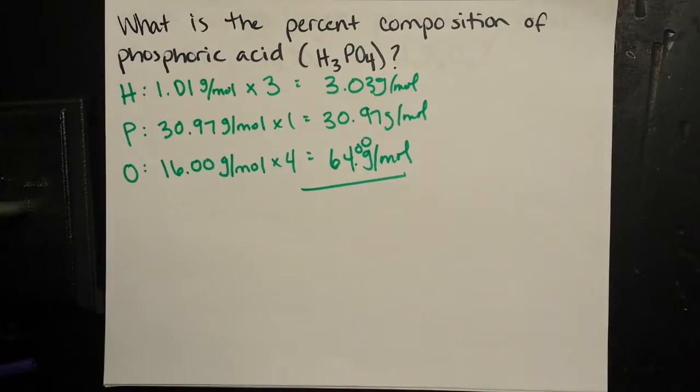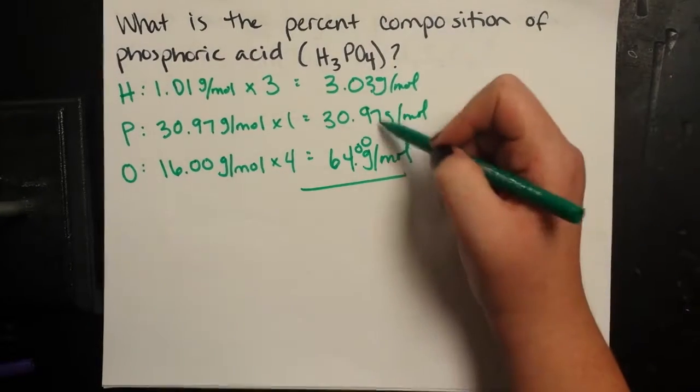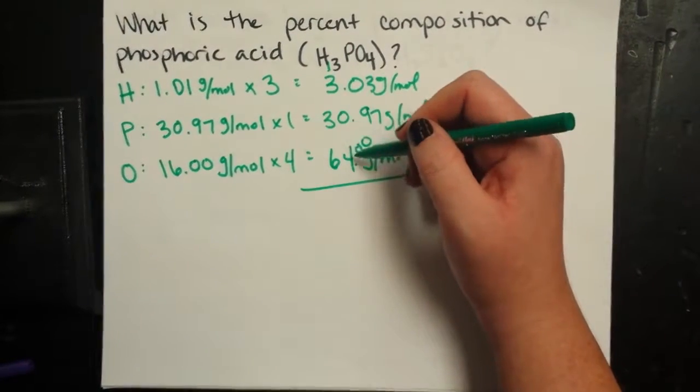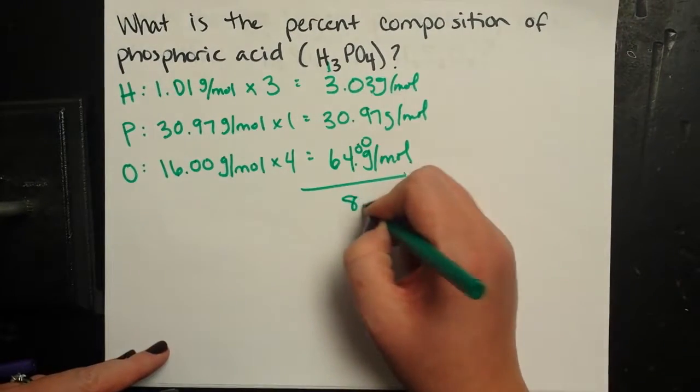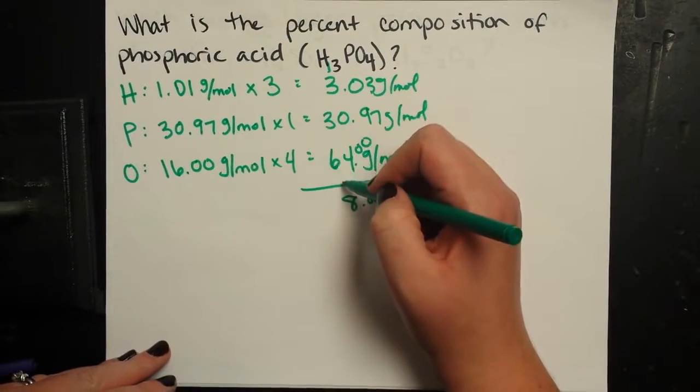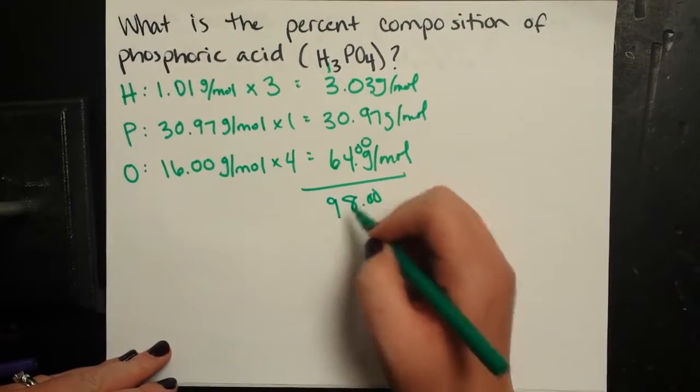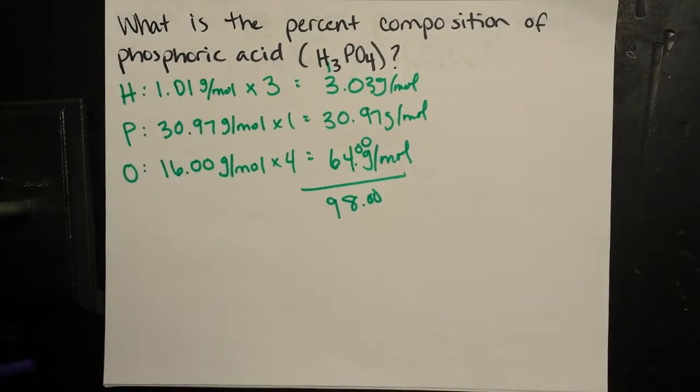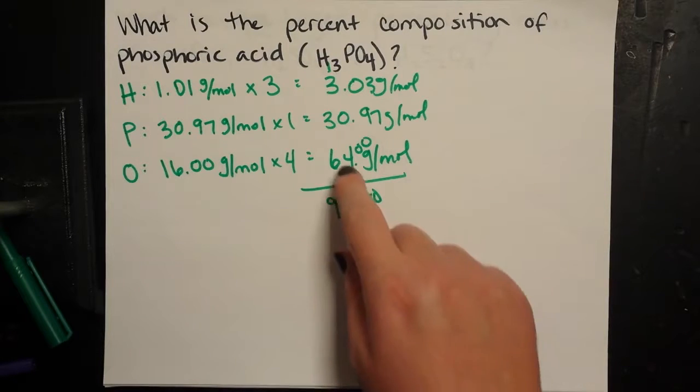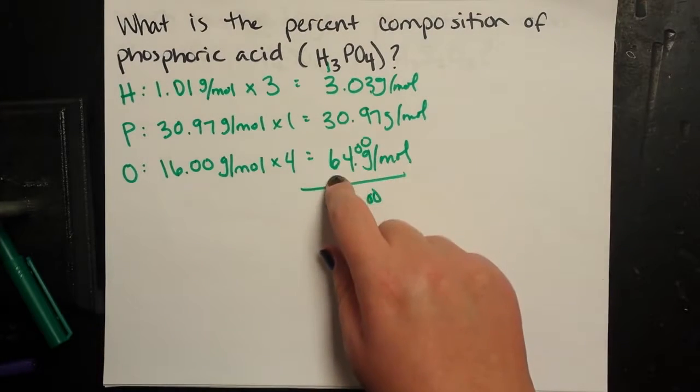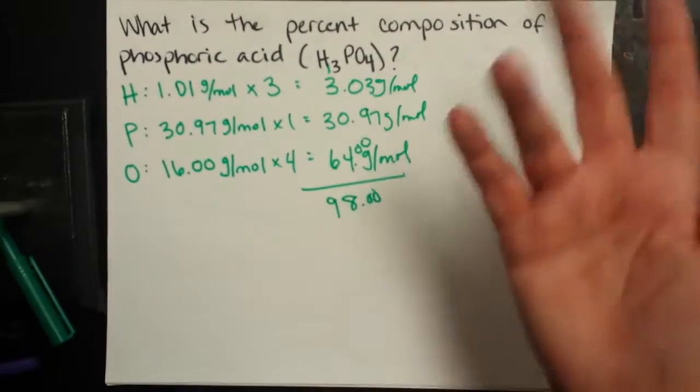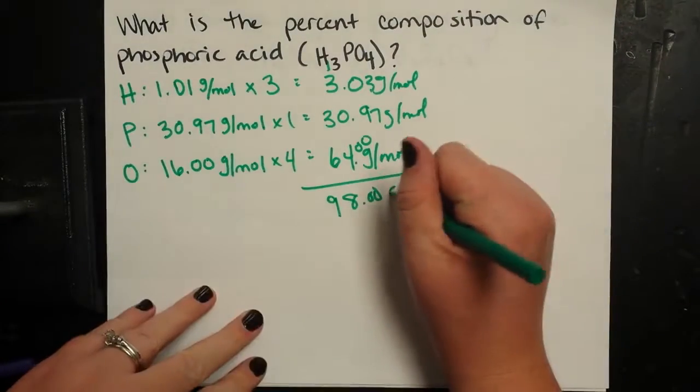If you add all these up, we should get a nice even number. So you should get 98.00 on the dot. Sometimes I don't always trust my math, but I can see that's going to be 94, 97, 98. Grams per mole.